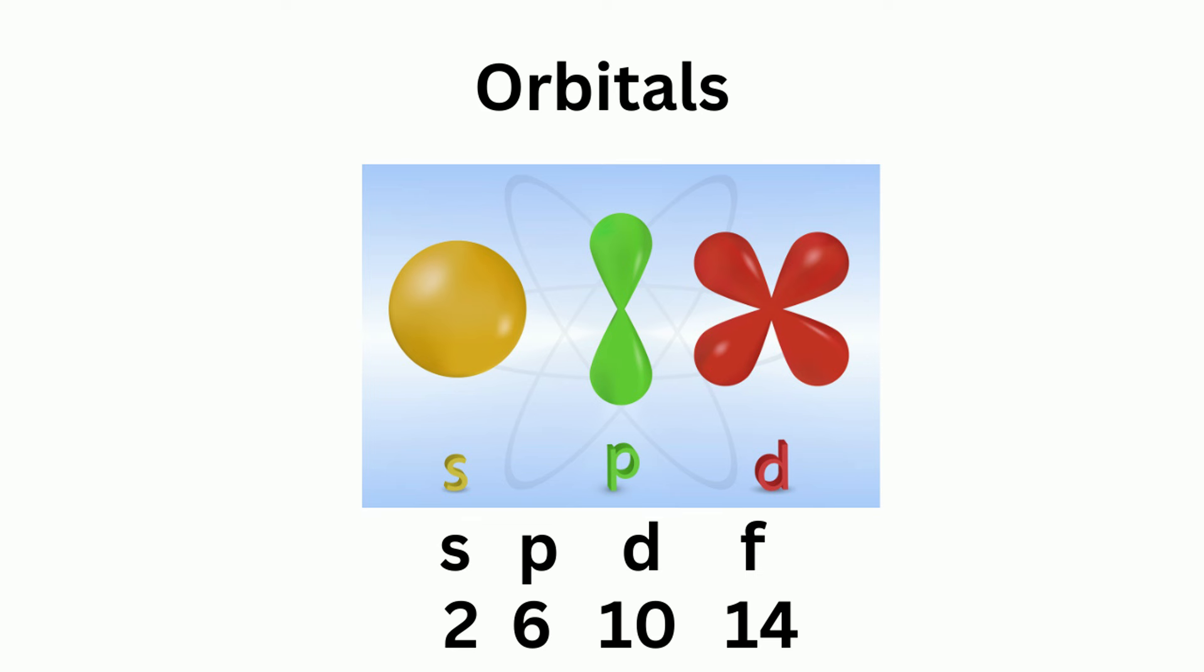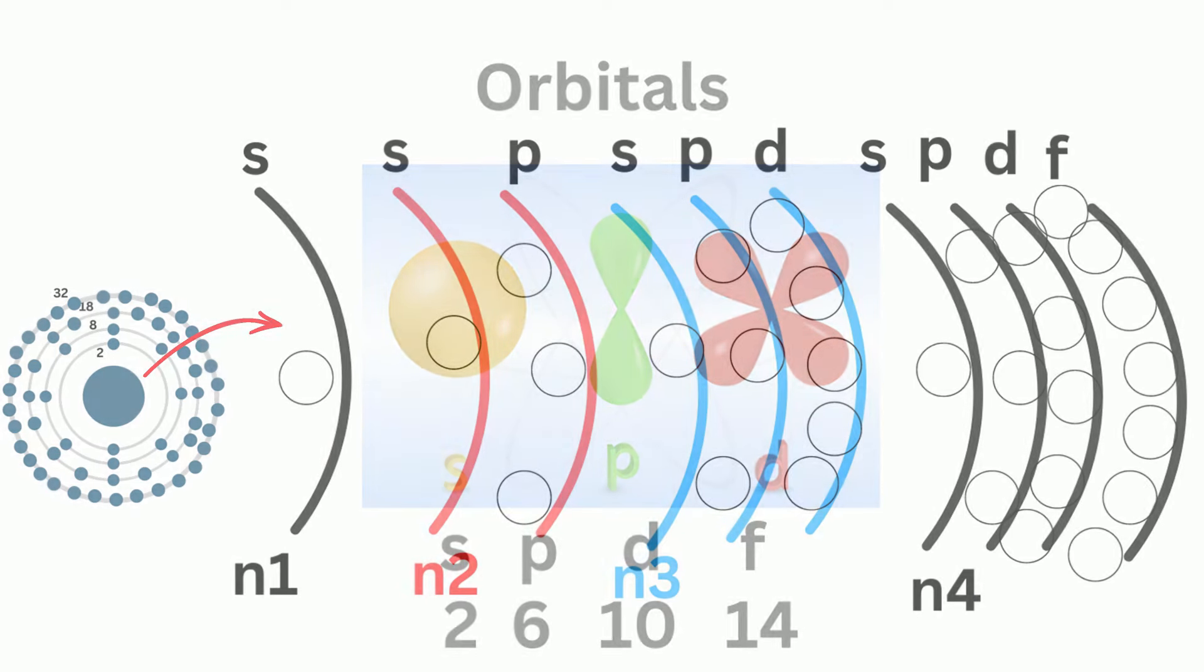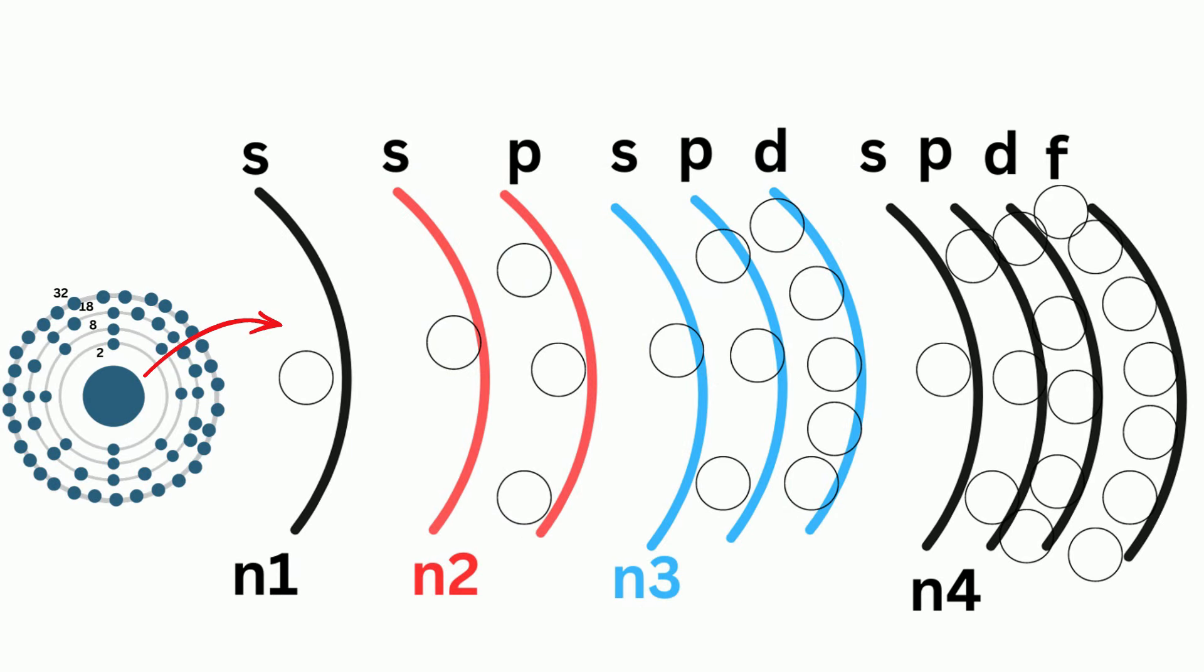S can hold 2, P can hold 6, D 10, and F 14. And notice that they go up by 4. But now, let's take a visual picture of this.